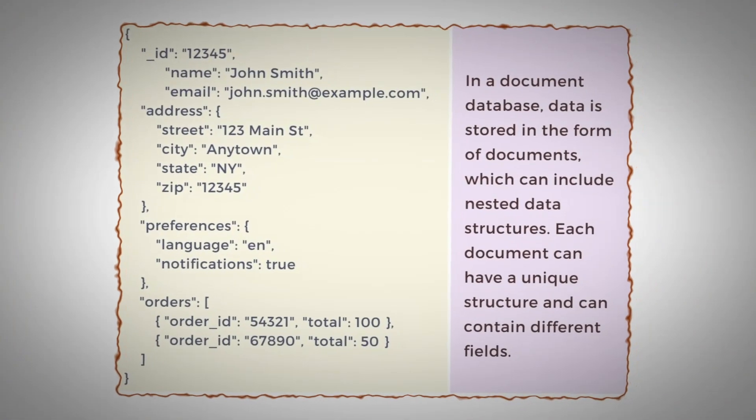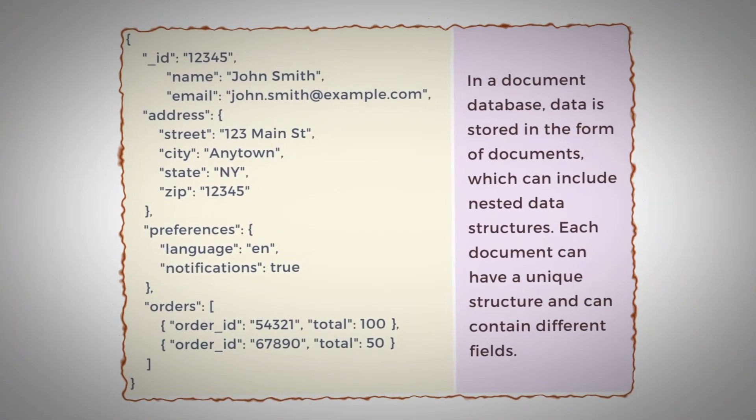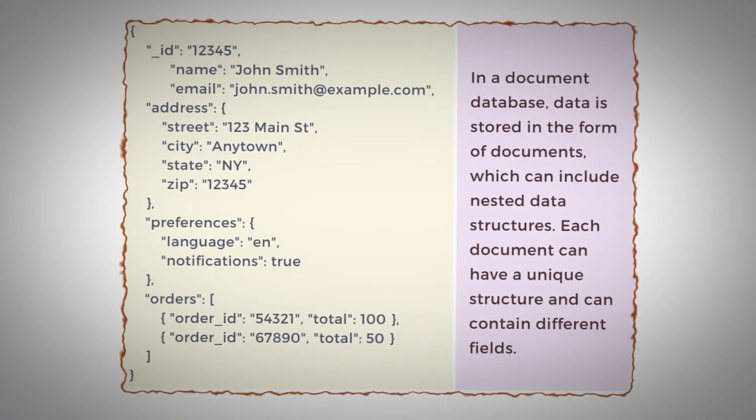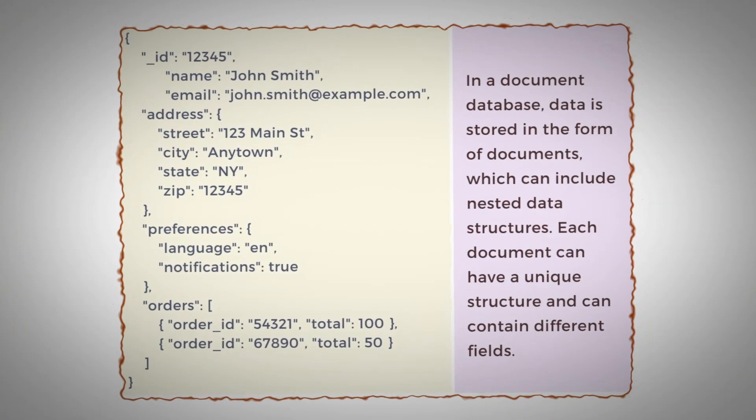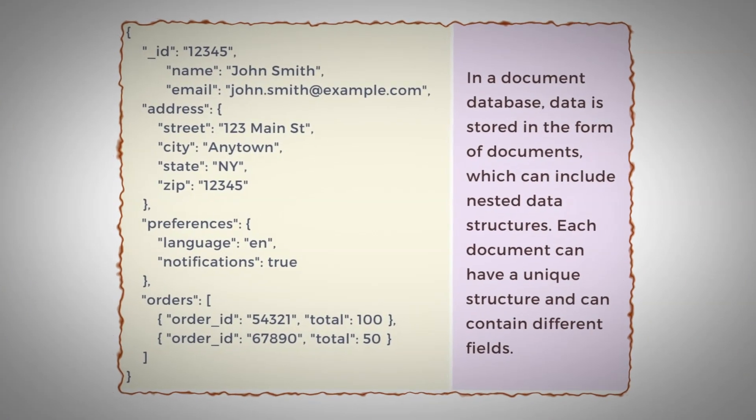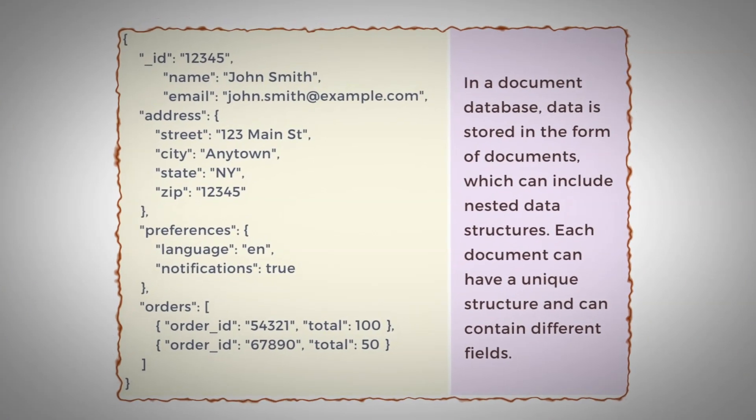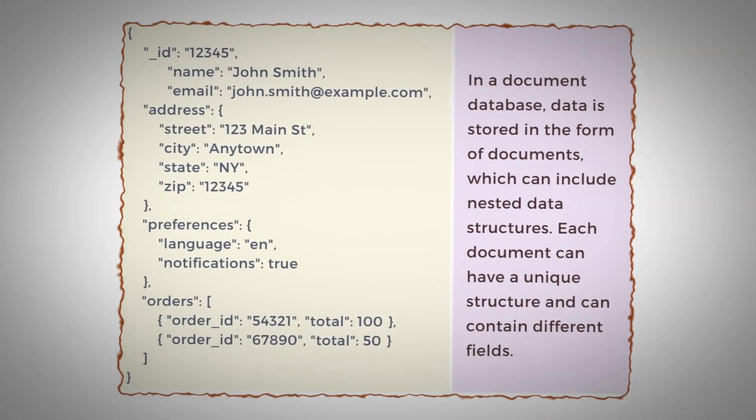Moving to semi-structured form of data — here we have NoSQL databases. The first one we want to discuss is the document database. A document-oriented database stores data in the form of documents, which could be a simple JSON or a complex JSON with multiple nested objects, maintaining a hierarchical structure.